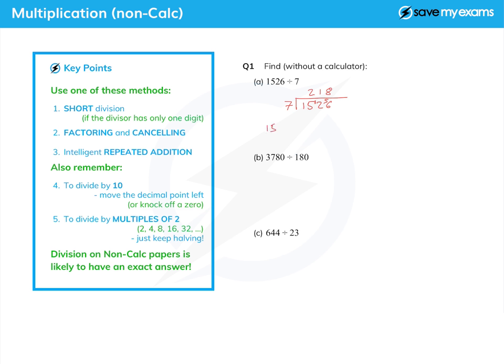Now what do I mean by factoring and cancelling? Well let's treat this as a fraction, so I've got 3780 over or divided by 180, and the first thing I can see is that I have a factor of 10 so I can actually just knock off the zero on the end and I've got 378 over 18.